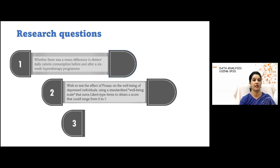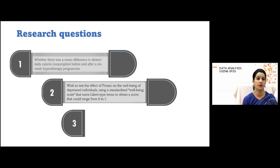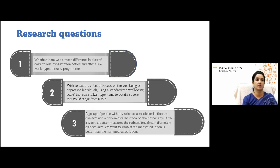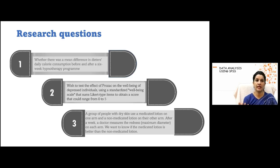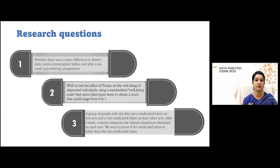A second question would be: if I wish to test the effect of Prozac — that is a drug — on the well-being of depressed individuals using a standardized well-being scale that sums Likert items to obtain a score ranging from 0 to 5. Here the one variable is the continuous variable and the independent variable is two different time points: pre-intervention and post-intervention. Similarly, a third type of research question: there is a group of people with dry skin and I am testing a medicated lotion on one arm and a non-medicated lotion on the other arm, and after a week I measure the dryness in terms of the maximum diameter on each arm, wanting to know whether the medicated or non-medicated lotion is better.